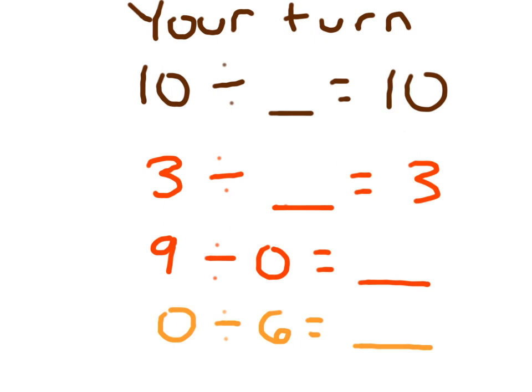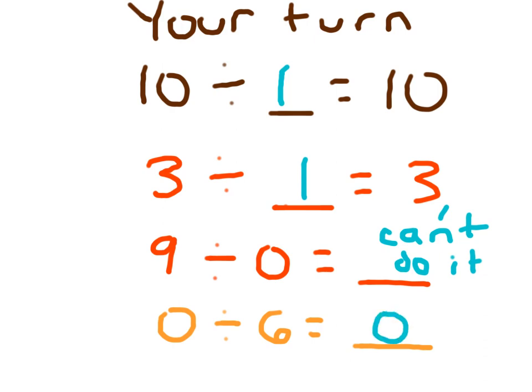Ideally, you copy down the whole equation when solving these, so you can check that you wrote them down correctly using these division rules. 10 divided by 1 equals 10. 3 divided by 1 equals 3. 9 divided by 0 — uh-oh, can't do it. You cannot divide by 0. 0 divided by 6 — you can do this because the divisor is not 0, so 0 divided by 6 is 0. And 6 divided by what equals 1? 6 divided by 6 equals 1.